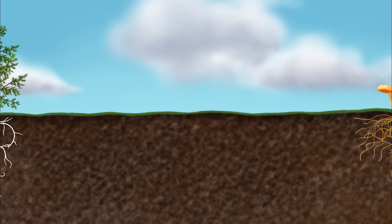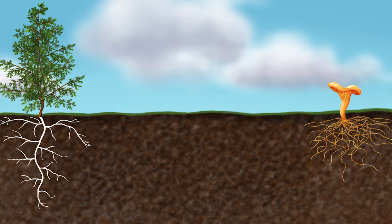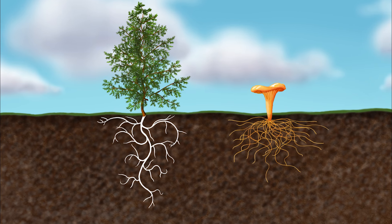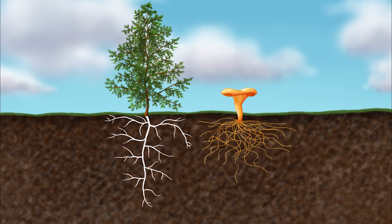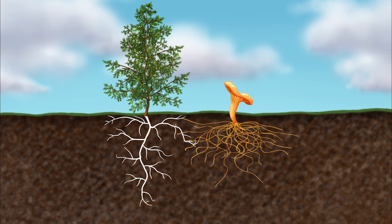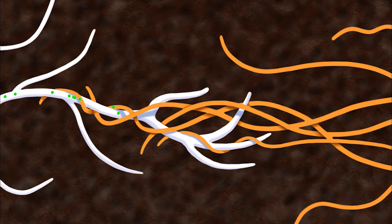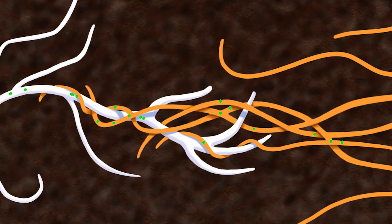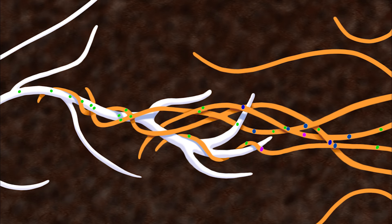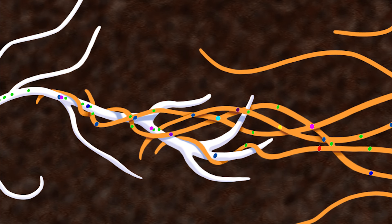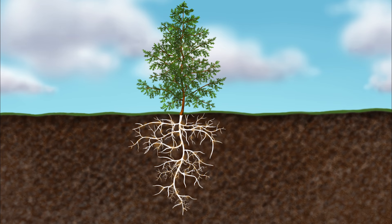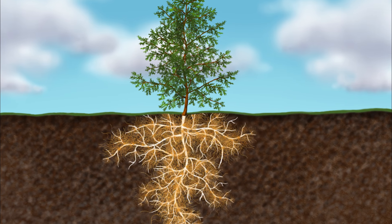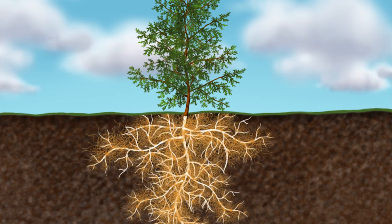More than 450 million years ago, certain types of plants and fungi formed a symbiotic, or mutually beneficial, relationship with each other. The plants give the fungi sugars that they produce through photosynthesis. In exchange, the fungi give the plants nutrients and water that they extract from the soil. 80% to 95% of land plants benefit from some type of mycorrhizal relationship.